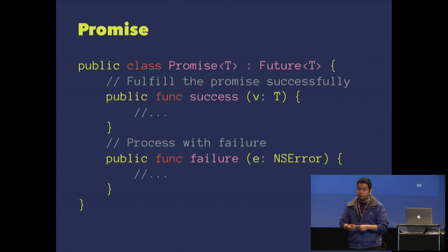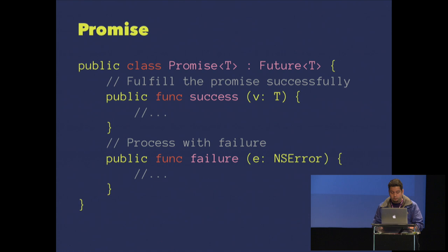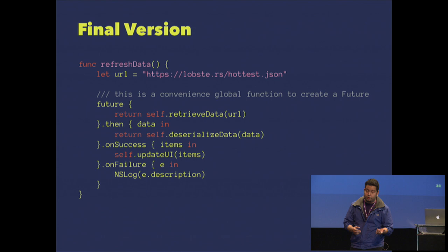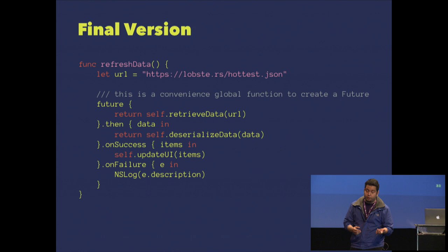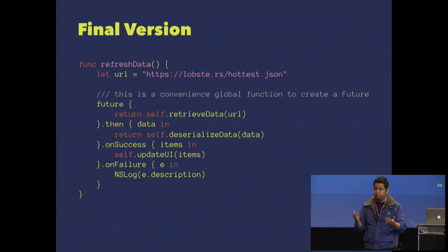The promise is an extension of future with just two extra methods — success and failure — I can write the result of a future from outside the block. Our code is now cleaner: I create a future that retrieves data from my URL, if correct I deserialize the data, and if the whole chain succeeds I update the UI. If I have an error, you can handle it any way you want — I'm just printing it.